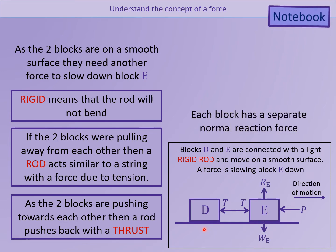In this case, each block will have a normal reaction and each block will have a weight force. So in each case, the weight will be mg, the mass of the object, multiplied by 9.8. And they will each have a normal reaction coming from the fact that they are both sitting on the surface.